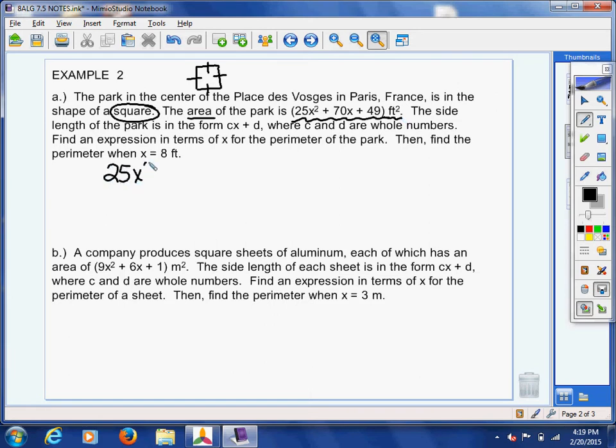So, here's our trinomial. We think it's a perfect square trinomial. It's a square. The understanding is if it's a square, then the area should be a perfect square trinomial area. But let's just double check it.